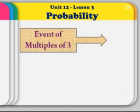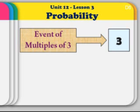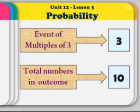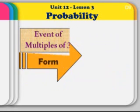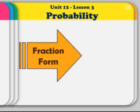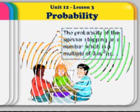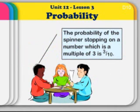We found the event of multiples of 3 was 3. We found 3 of them, 3, 6 and 9. We also found the total numbers in outcome. We found there were 10. So that leads us to our fraction form. We are now ready to present our probability in fraction form. We found the numbers 3 and 10. So our probability in fraction form is 3 over 10 or 3 tenths. The probability of the spinner stopping on a number which is a multiple of 3 is 3 over 10 or 3 tenths.